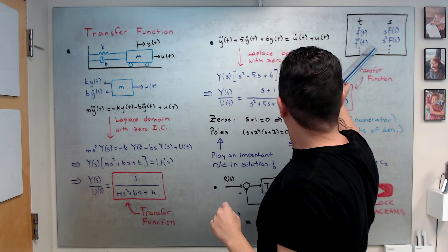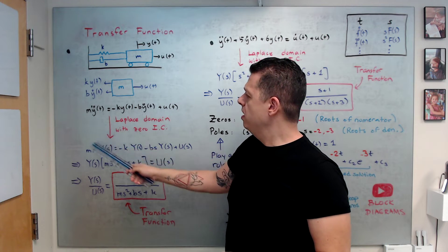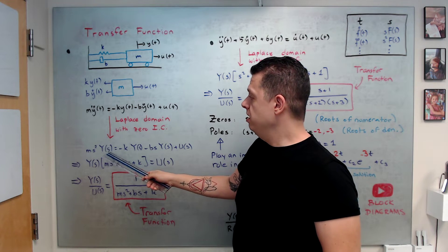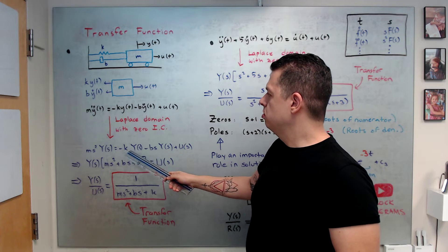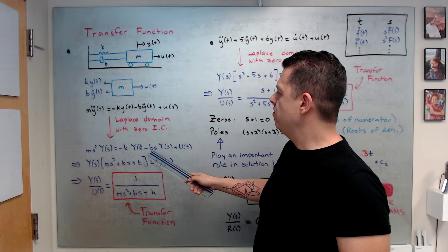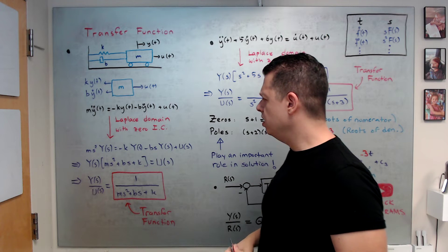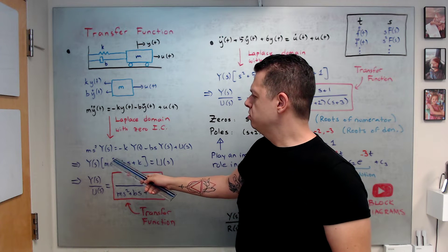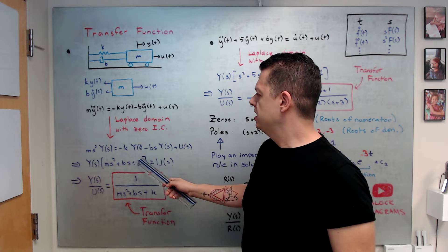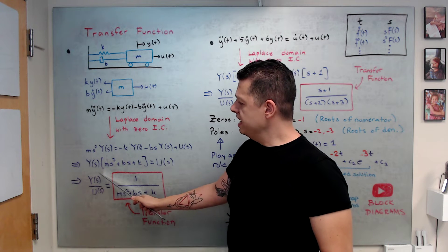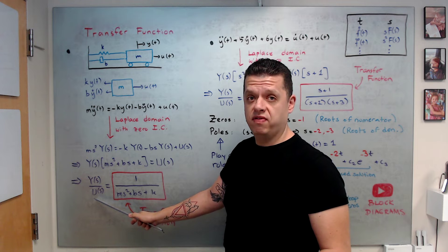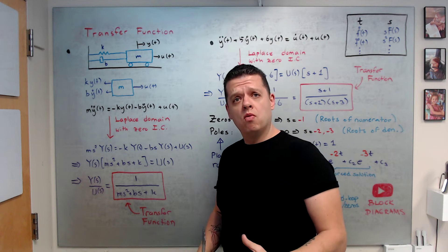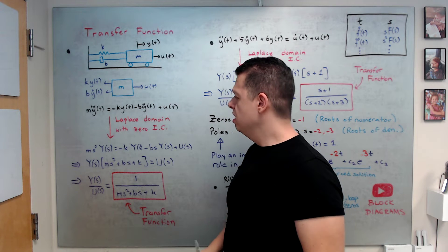This is under zero initial conditions. Applying this transformation to our equation, we get m·s²·Y(s) — because we have two derivatives — minus k·Y(s) minus b·s·Y(s) plus U(s). Grouping terms in Y: Y(m·s² + b·s + k) = U. Dividing output by input gives the transfer function: 1 / (m·s² + b·s + k).